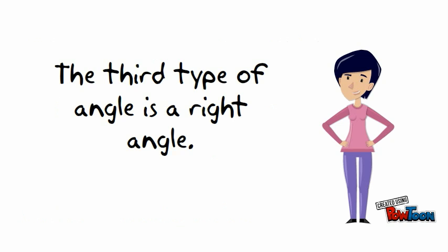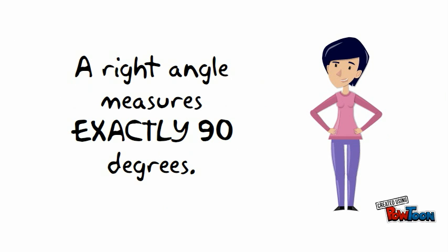The third type of angle is a right angle. A right angle measures exactly 90 degrees.